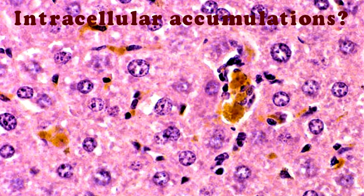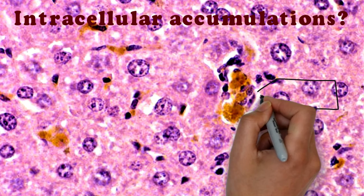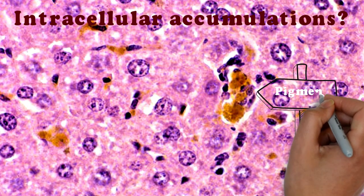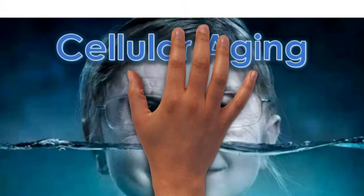Now what is intracellular accumulation? Sublethal or chronic injurious stimuli as well as metabolic derangements can cause intracellular accumulation of normal cellular constituents, abnormal cellular constituents, or pigments.